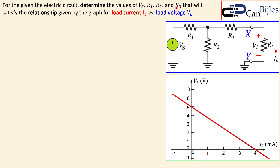What we have is this electric circuit, and the values of VS, R1, R2, and R3 are unknown — we need to determine them. We need to find values for these four components that satisfy the relationship given by the graph for the load current versus load voltage. The load voltage is across the load, and there is a load current flowing through the resistor between node X and Y.